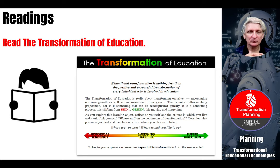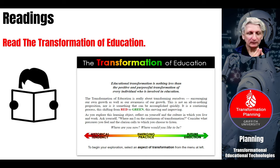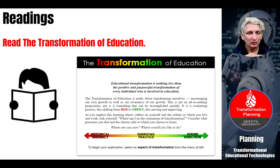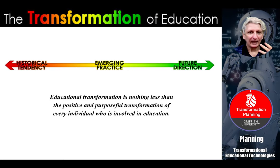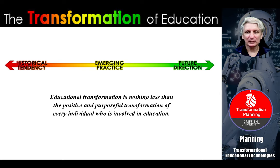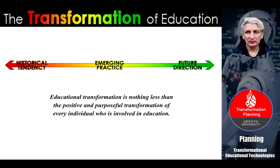The first text to look at is a set of slides around the transformation of education, moving from what's been done historically through to looking at emerging practices through to what could be done in the future. These need to be positive things. We're not looking at future studies focused on all the potential negatives; we're trying to frame a positive future for your organisation and look at the processes involved in achieving that. But first, we need to understand what might be possible.